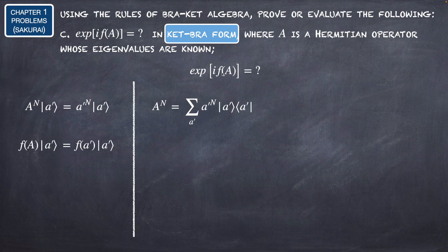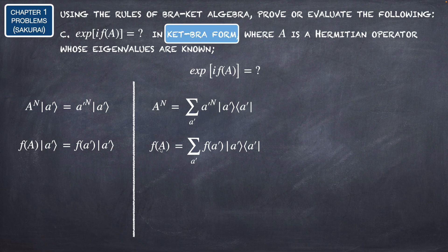Now we have a function of the operator, which we can write as a series of polynomials in A^N. Since A^N|a'⟩ = a'^N|a'⟩, a function F(A) written as a sum of powers of A will act on |a'⟩ to give F(a')|a'⟩. The ket-bra form of this operator F(A) is the summation over a' of the eigenvalue F(a') multiplied by the projection operator |a'⟩⟨a'|.